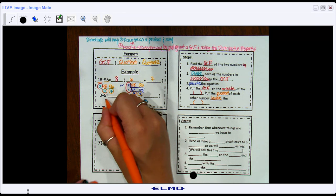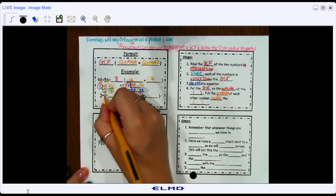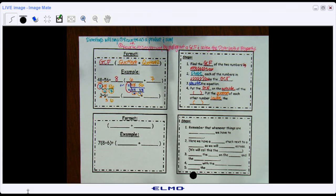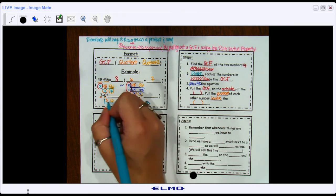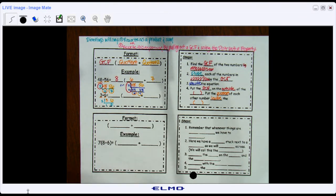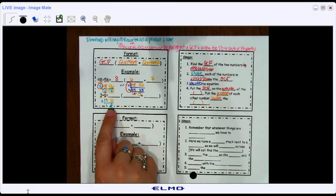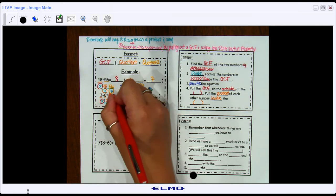We have 3 and we have 6. I'm going to do my ladder method to try to figure out the GCF. And I think 3 can go into both of those numbers. 3 goes into 3 once, and 3 goes into 6 twice. There are no other numbers or factors in common for 1 and 2.